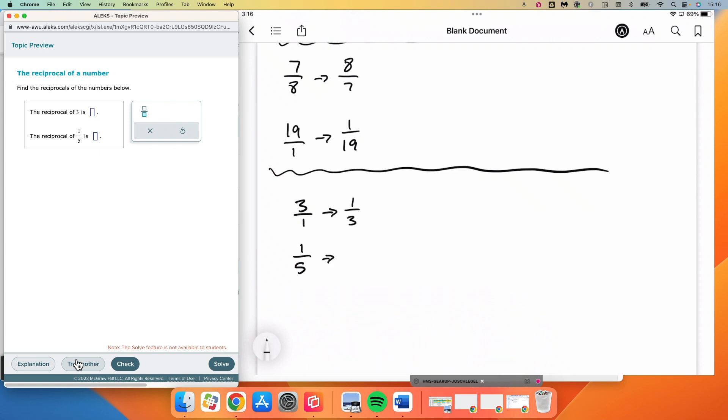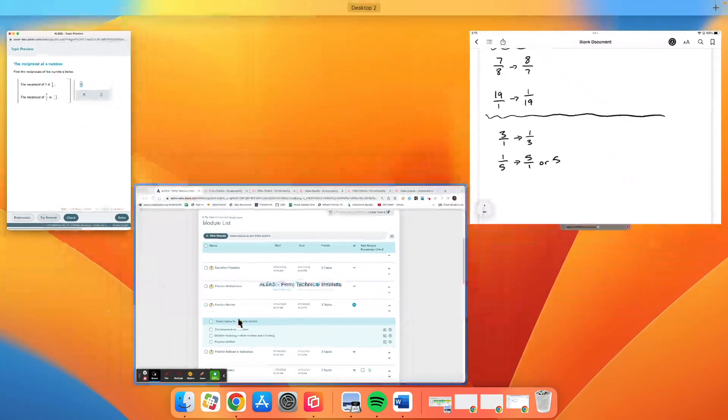Reciprocal of 1 fifth, I just flip the number over. We get 5 over 1. Or that could be rewritten as 5. That's it for this one.